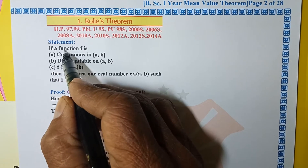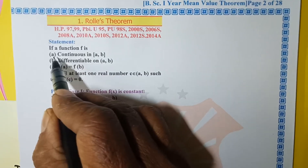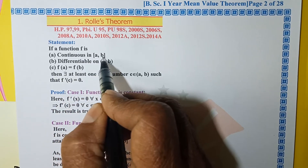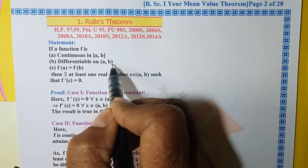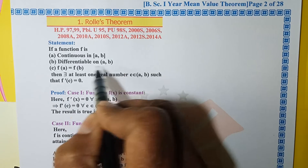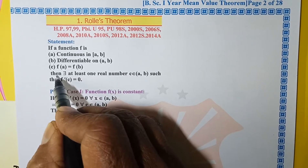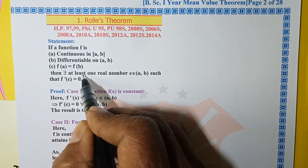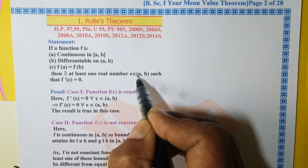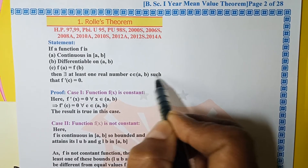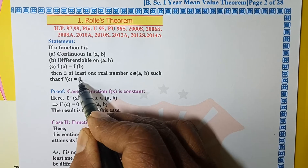If a function f(x) is: number 1 — continuous in closed interval [a, b]; number 2 — differentiable on open interval (a, b); and number 3 — f(a) equal to f(b); then there exists at least one real number c belonging to open interval (a, b) such that f'(c) equal to 0.